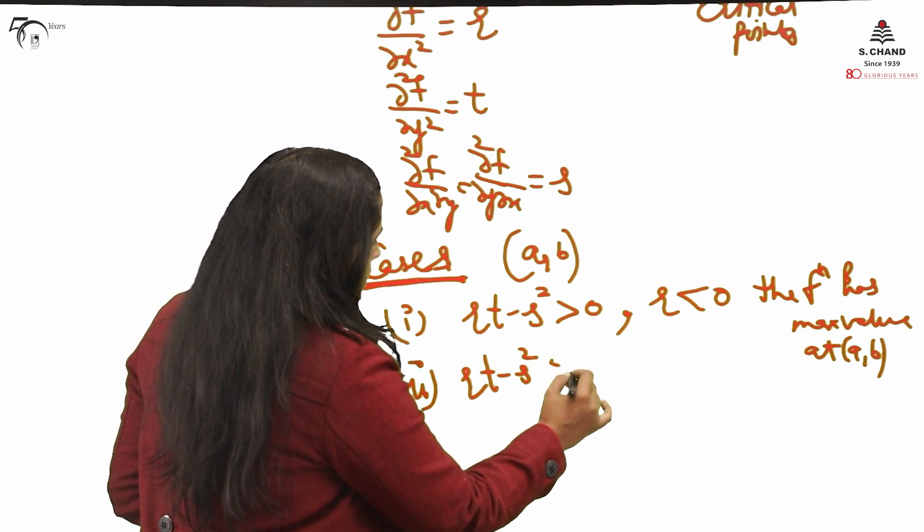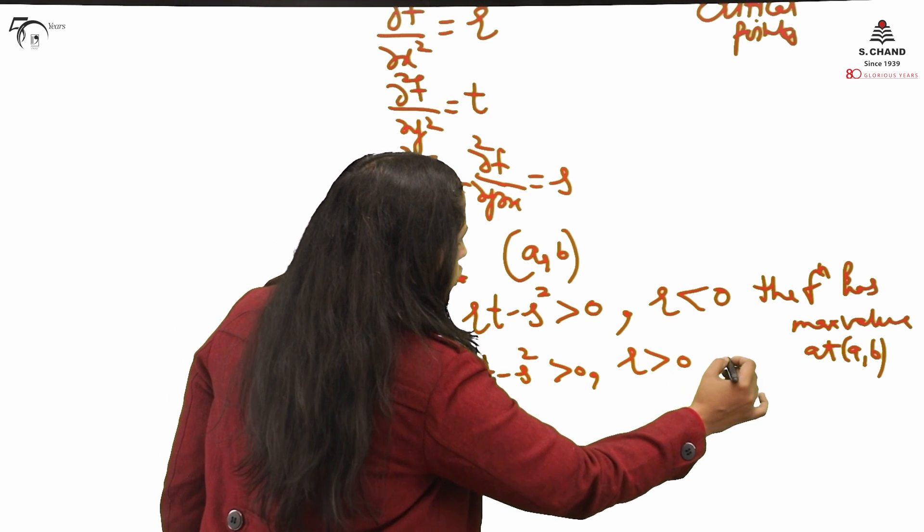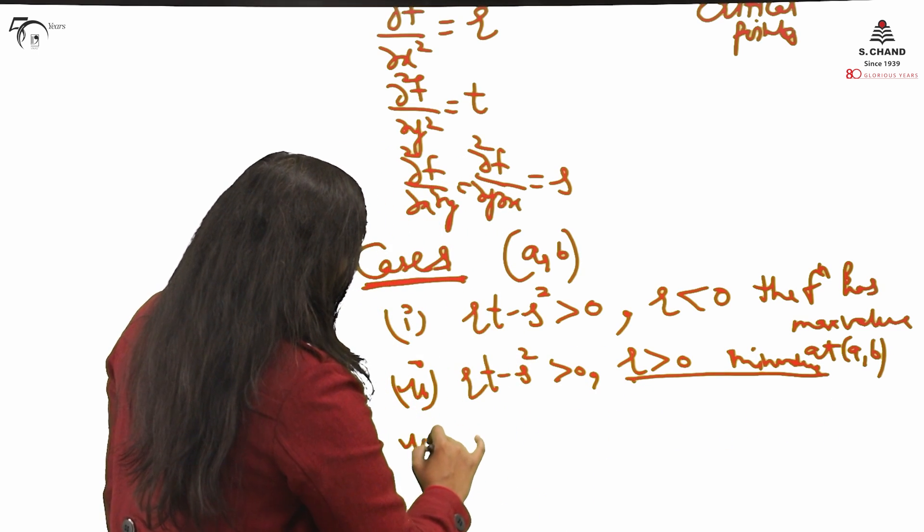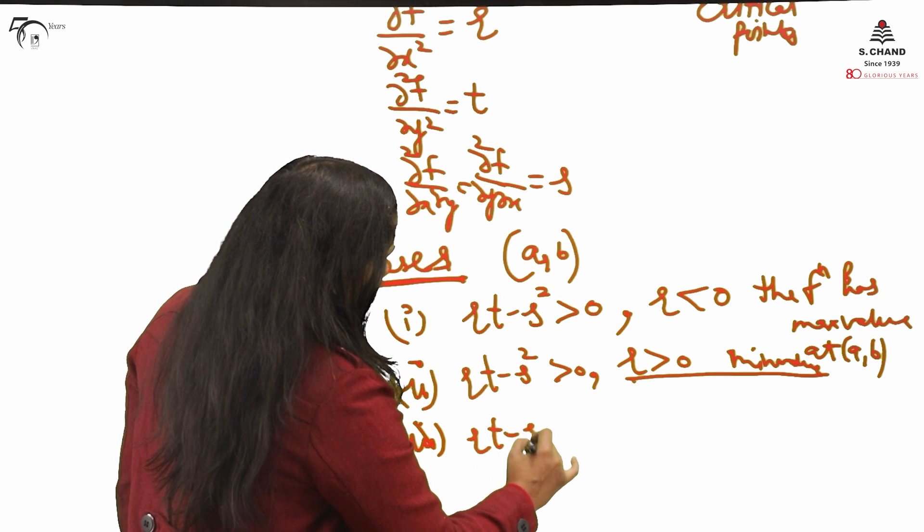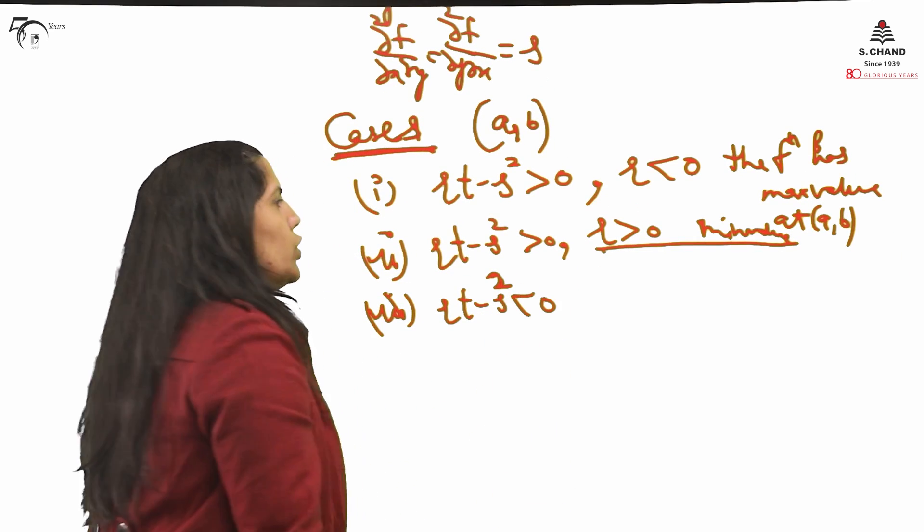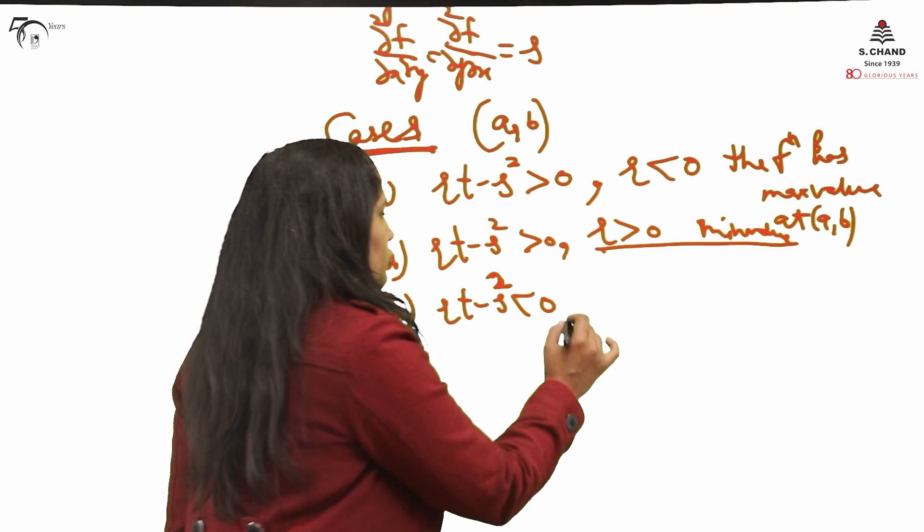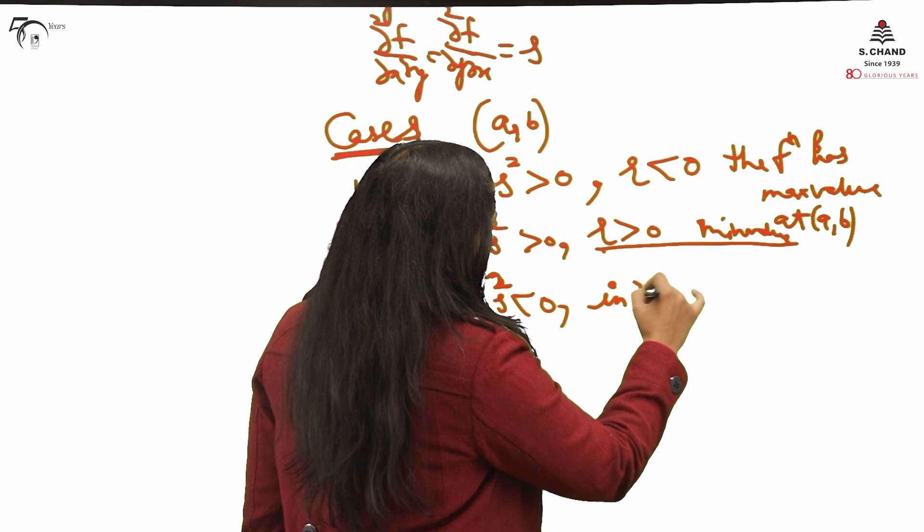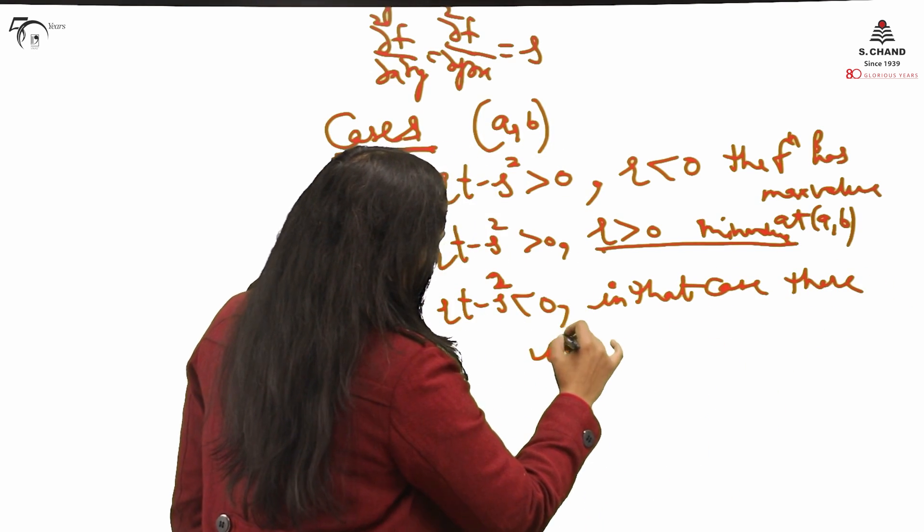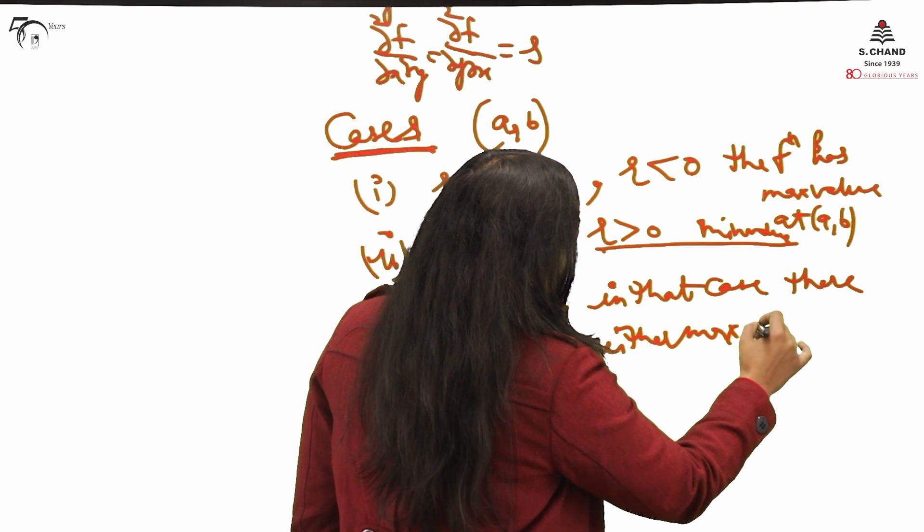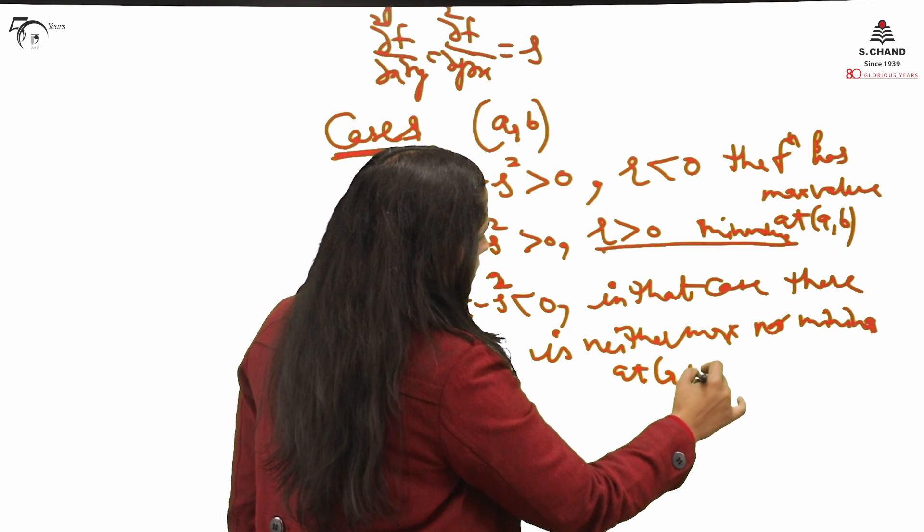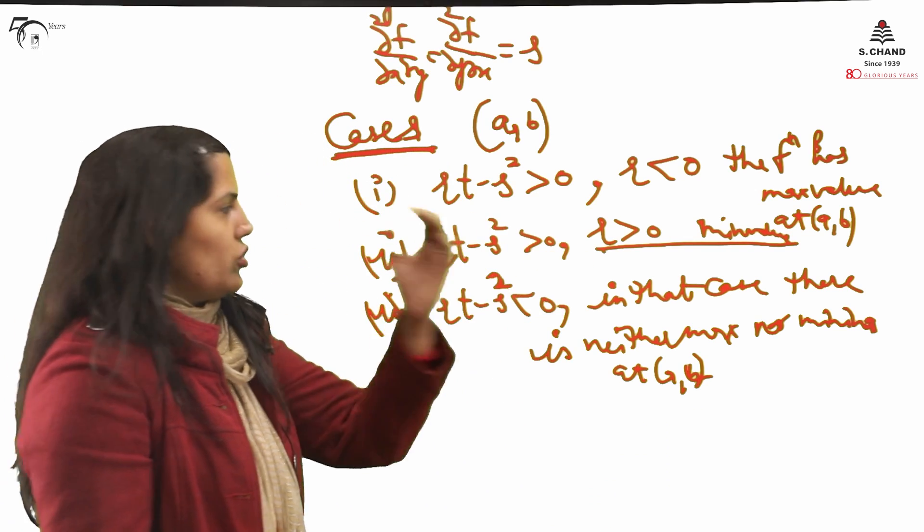If rt - s² is greater than 0 but r is greater than 0, it means the function has minimum value at that particular point. If rt - s² is less than 0, it means there is neither maxima nor minimum situation. In that case, there is neither maxima nor minima at (a,b).